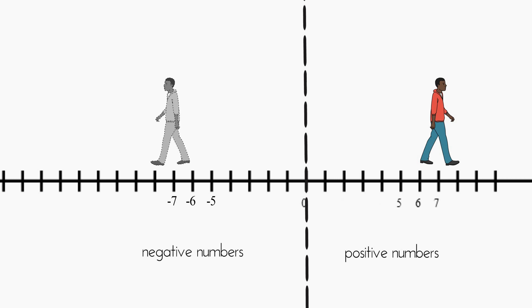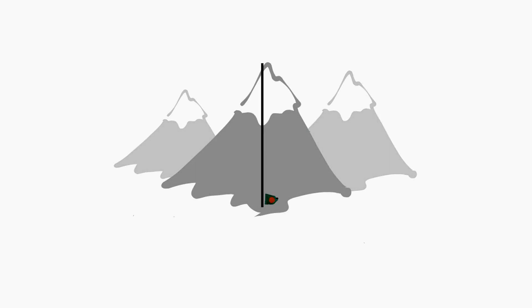When we put the negative numbers and positive numbers together, we can make all kinds of different measurements. For example, three climbers are on this mountain.